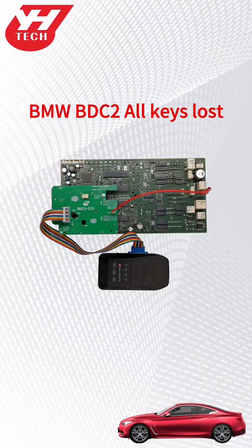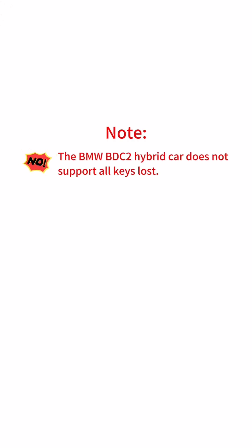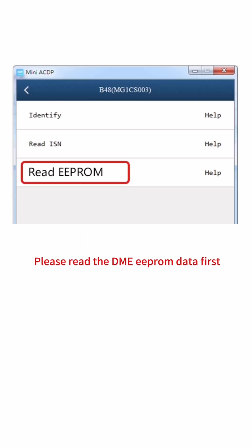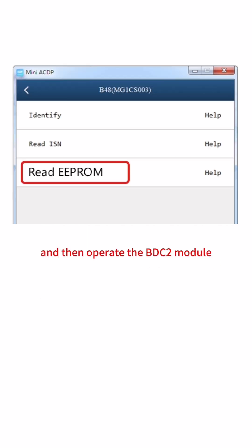This video shows you how to use ACDP to perform BMW BDC2 all keys lost. Note: the BMW BDC2 hybrid car does not support all keys lost, and ACDP cannot clear the EMEISN. BDC2 all keys lost requires a DME EEPROM file, so please read the DME EEPROM data first, and then operate the BDC2 module.